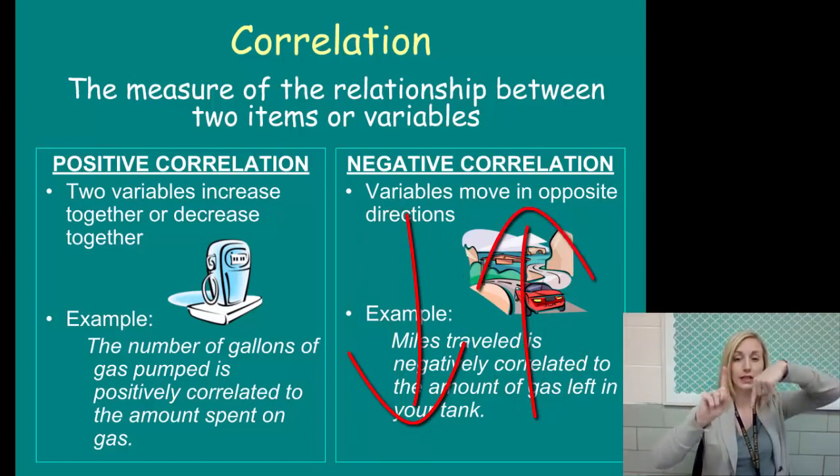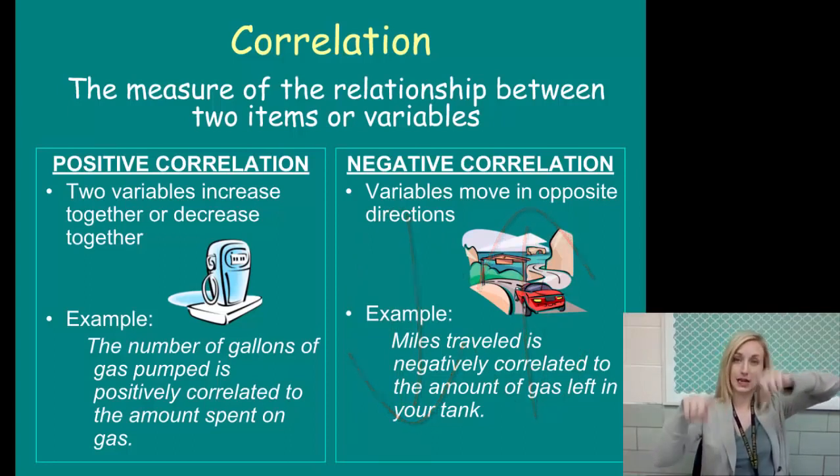Correlations are not just positive and negative. They go both ways within one correlation. The miles traveled goes up as the amount left in your tank goes down. Just like the amount left in your tank goes down, the miles traveled goes up. They could go both ways.